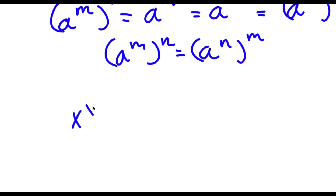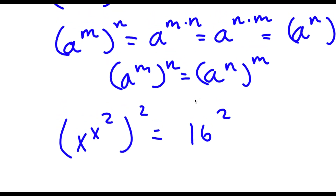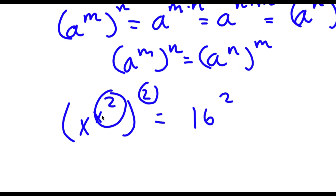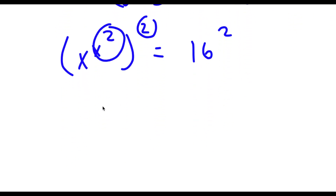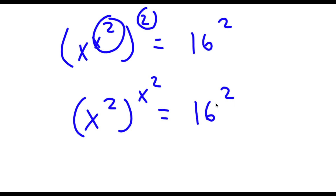So right here we have x to the power of x to the power of 2, to the power of 2, is equal to 16 to the power of 2. We can think of x to the power of 2 as m and 2 as n. So this is the same thing as a to the power of n to the power of m, meaning if we swap these two, it equals x to the power of 2 to the power of x to the power of 2, which is equal to 16 to the power of 2.